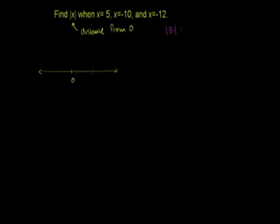The absolute value of 5 is the distance of 5 from 0. So you go 1, 2, 3, 4, 5. 5 is exactly 5 to the right of 0. So the absolute value of 5 is just 5.